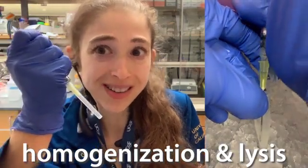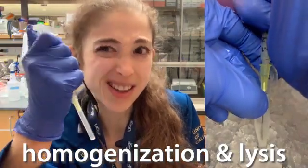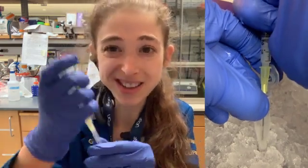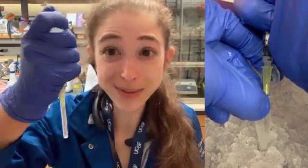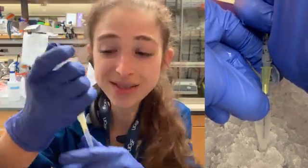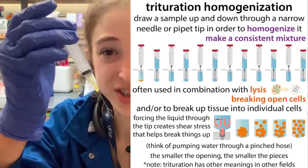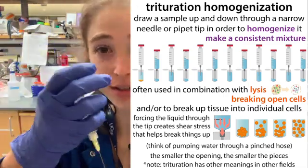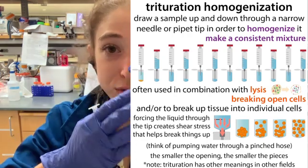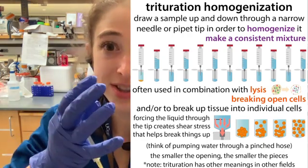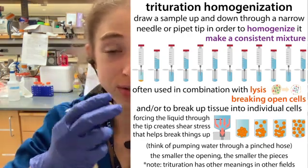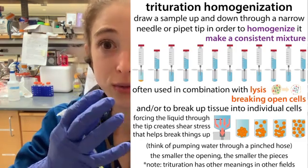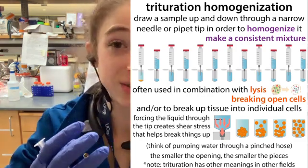Triturate — a word my tongue likes to say but my thumbs really hate. Trituration basically means going up and down repeatedly, typically through a syringe. This is a form of homogenization — a way to make things a uniform mixture. We often use it to separate cells or to help when we're breaking open cells, so lysing them.